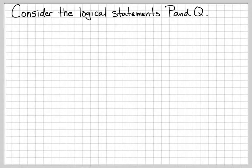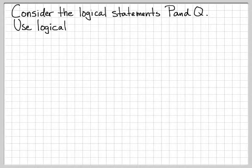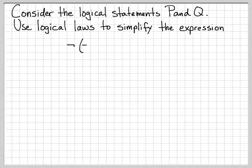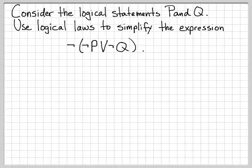In this problem, we're going to work on how you go about simplifying logical expressions. We're going to work with a logical expression that has the logical statements P and Q. The expression that we're going to start with is not quantity, not P or not Q. So is there a way that we can simplify this using the logical laws that we know?